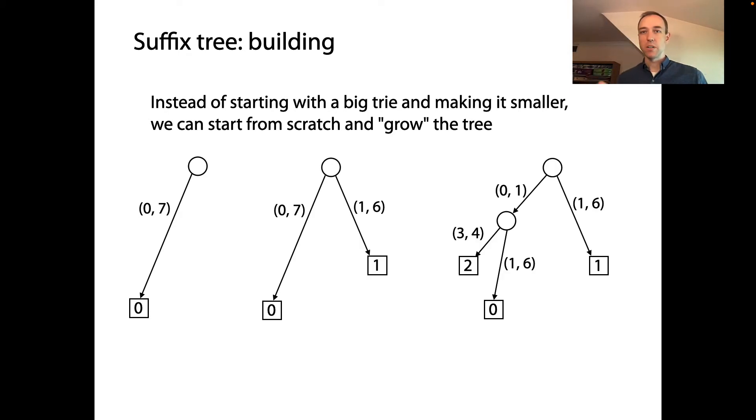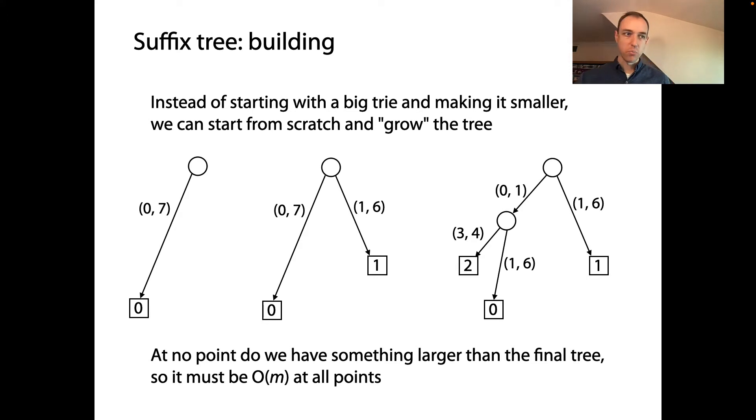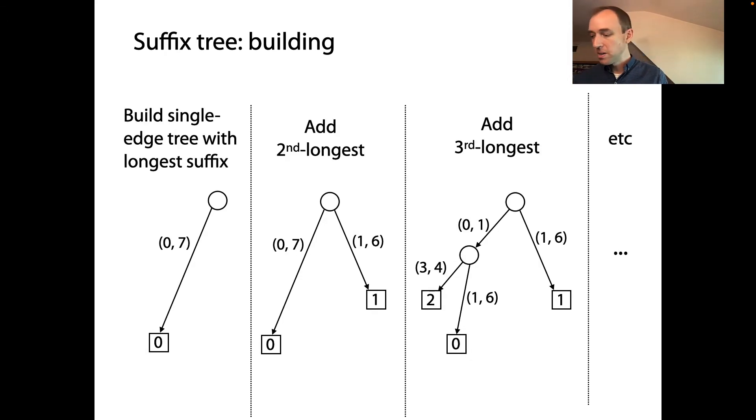The basic idea for how we're going to do that is we're going to start from nothing, we're going to add information one suffix at a time to the tree and elaborate the tree, get a more complicated tree as we go. If we do this from scratch and eventually end up at the full tree, then at no point did we have something that was bigger than the final full tree. And so we can claim that this overall process must have been O(M).